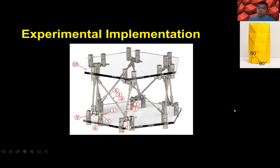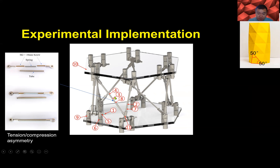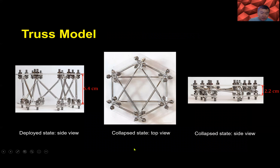Based on this analysis, we built a physical model using off-the-shelf parts. The key component is achieving asymmetric tension-compression behavior for the AC member. Here are nodes A, C, and B. We use a tube with a spring inside — stretching it is easy, but compressing the tube is hard. In our model, energy is considered only in the bars, with no energy at the hinges, so we have smooth joints at all joint points. This shows the deployed state side view and the collapsed state top view — height changes from 6.4 to 2.2.